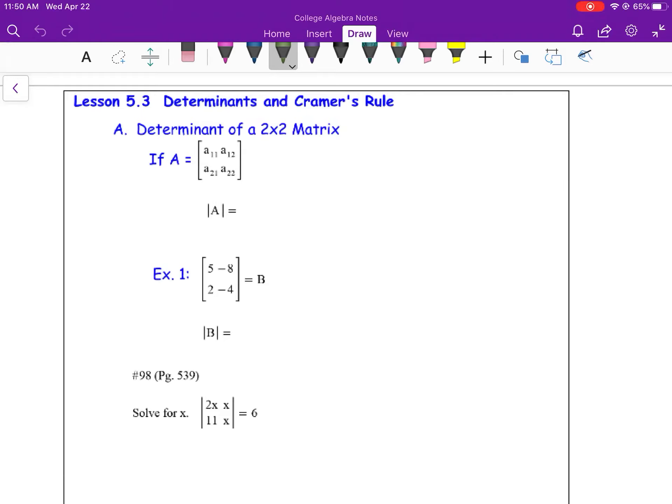Welcome to College Algebra lesson 5.3, your second to last lesson of College Algebra. We are going to look at matrices today, specifically square matrices. Matrices that are square have the same number of rows as they do columns.